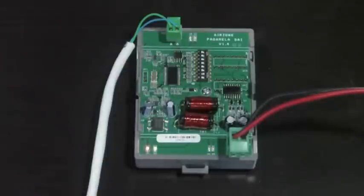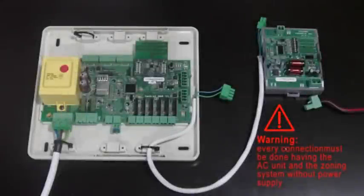This gateway has two connectors for the connection with the Airzone main controller and the Daikin AC unit. Connections and microswitch configuration must be done with both the Airzone zoning system and AC unit not power supplied.